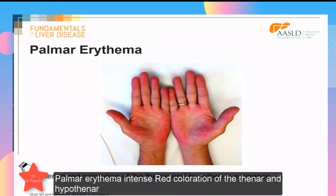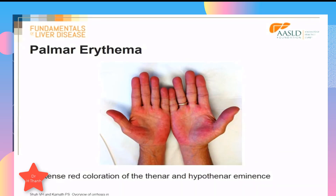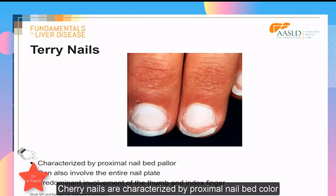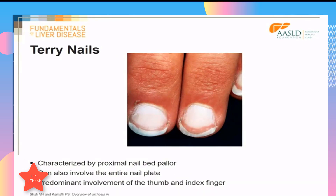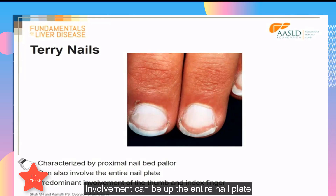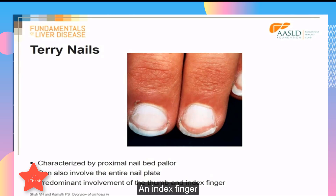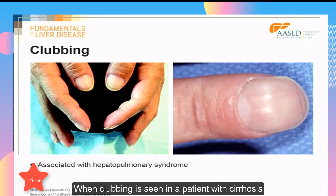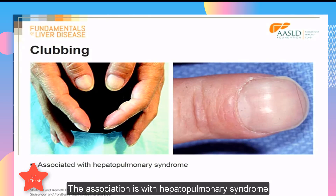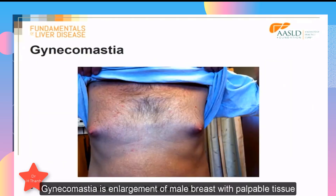Palmar erythema is the intense red coloration of the thenar and hypothenar eminences. Terry nails are characterized by proximal nail bed pallor; the involvement can be of the entire nail plate, and typically the predominant involvement is of the thumb and index finger. When clubbing is seen in a patient with cirrhosis, the association is with hepatopulmonary syndrome. Gynecomastia is enlargement of male breasts with palpable tissue.